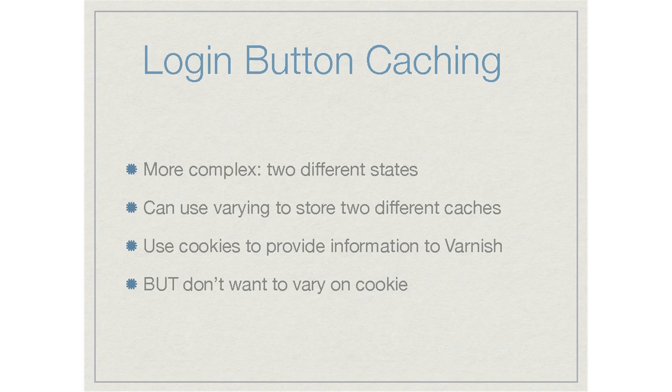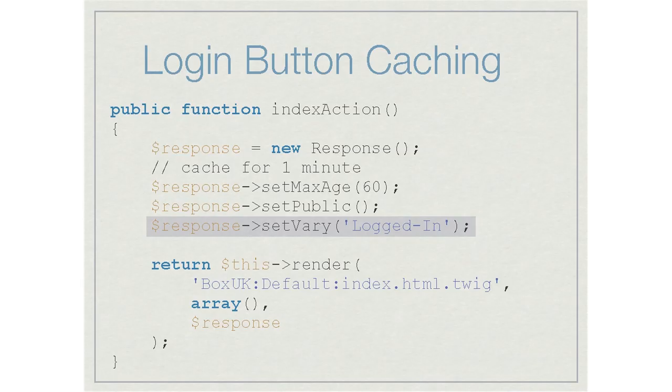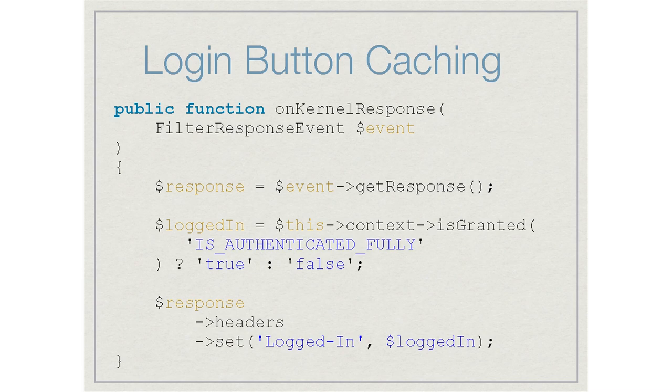Something like the login button is more complex. It has two different states: logged in shows logout, logged out shows login. We use varying to store two different versions of the cache — one for logged-in users, one for logged-out. We'll use cookies to provide information to Varnish, but we don't want to vary on the full cookie because you'd vary on every permutation and absolutely load Varnish with so much information the memory is used up instantly. Instead, we vary on a response header called 'logged-in' to indicate whether the user is logged in, and we keep caching as small and discrete as possible.